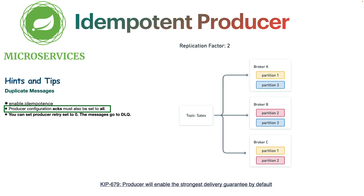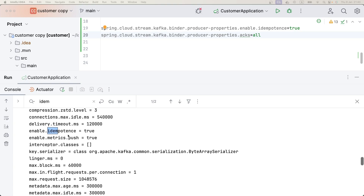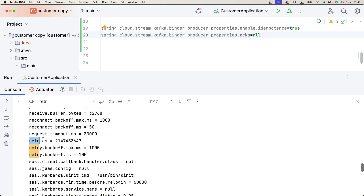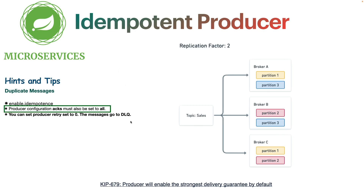We also set acks to 'all'. This means that if our cluster has, say, three brokers, the acknowledgment will only be sent when all brokers have received the message. Now, someone might think: we're getting duplicates because of retries — what if we just set retries to zero? In Spring Cloud Stream, the default retry count is Integer.MAX_VALUE, the maximum possible.